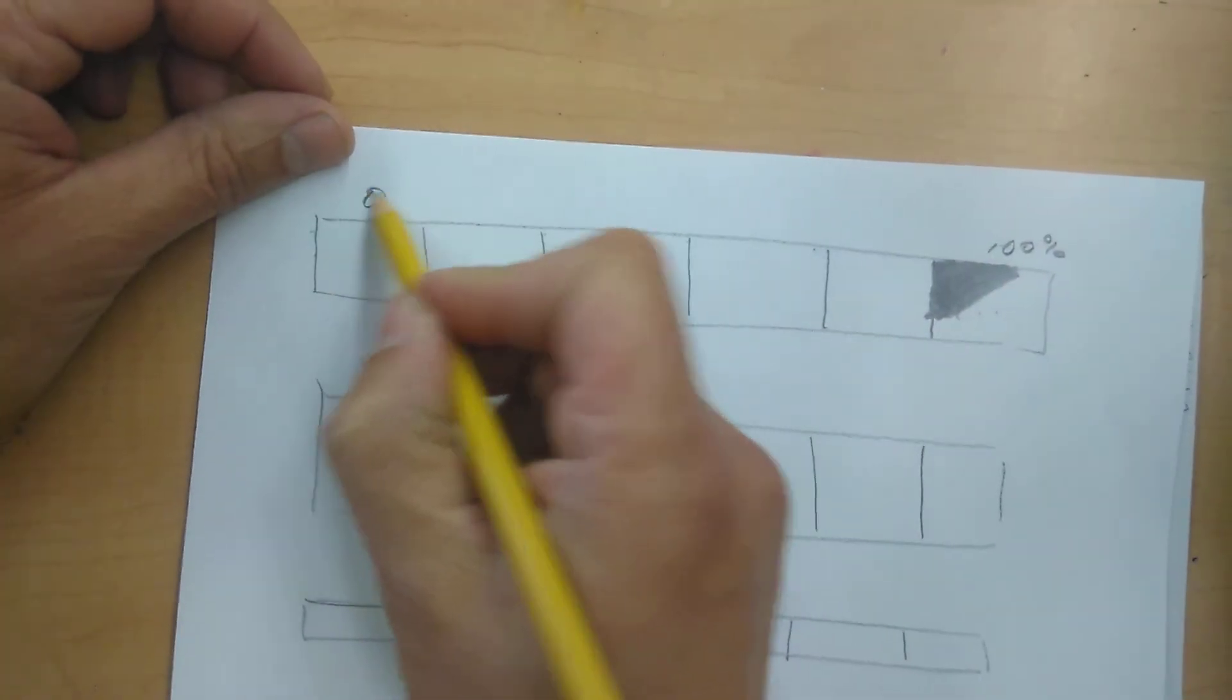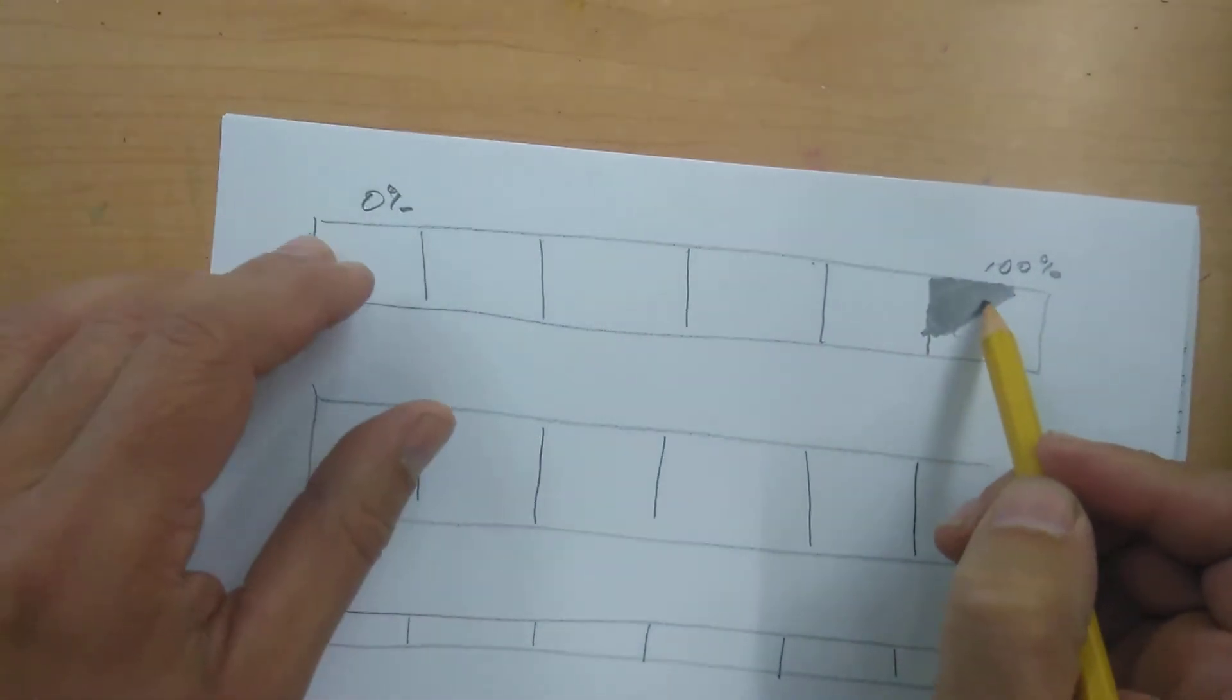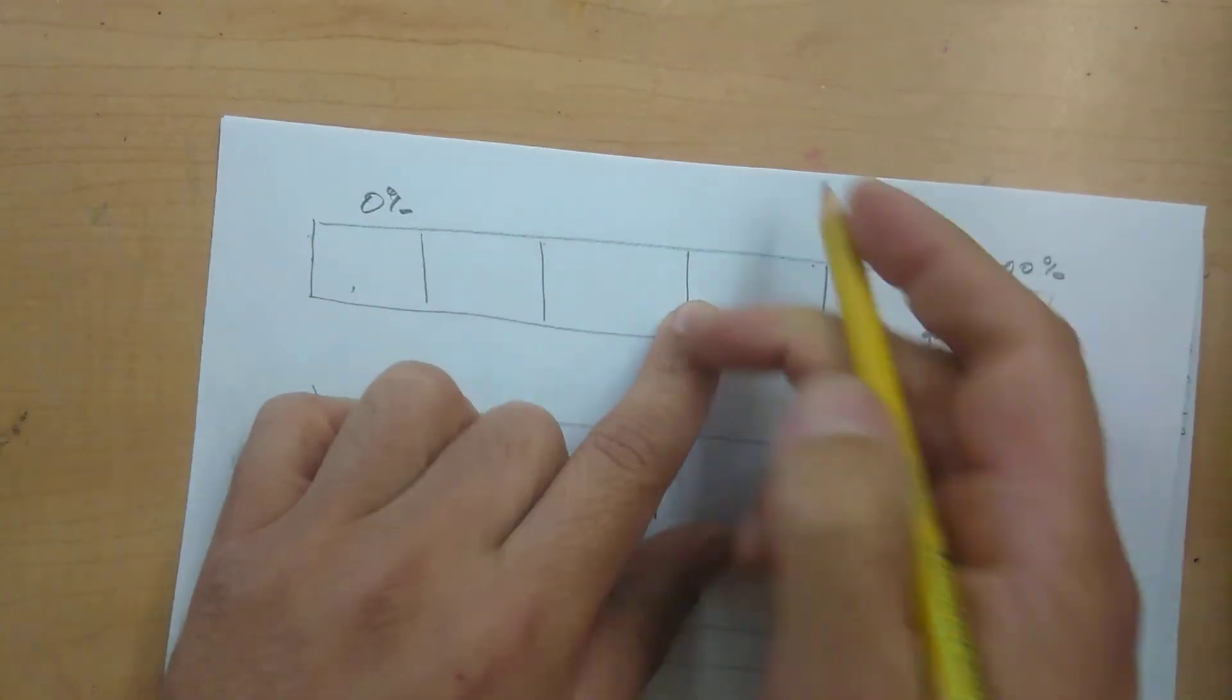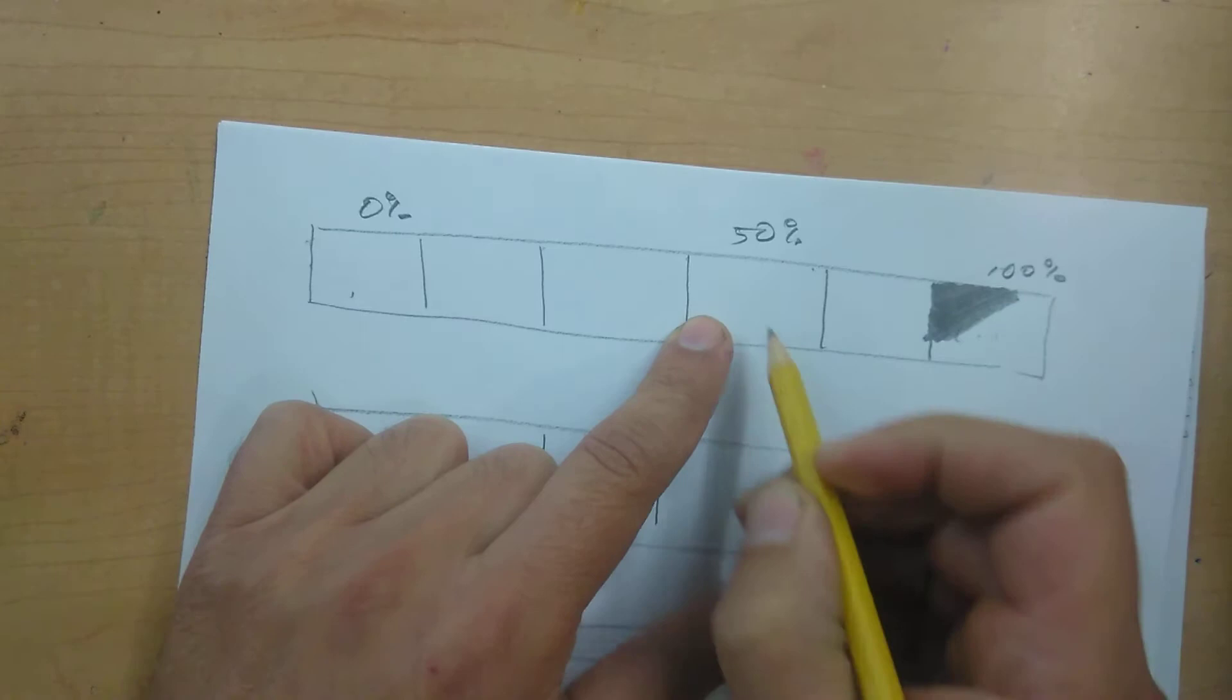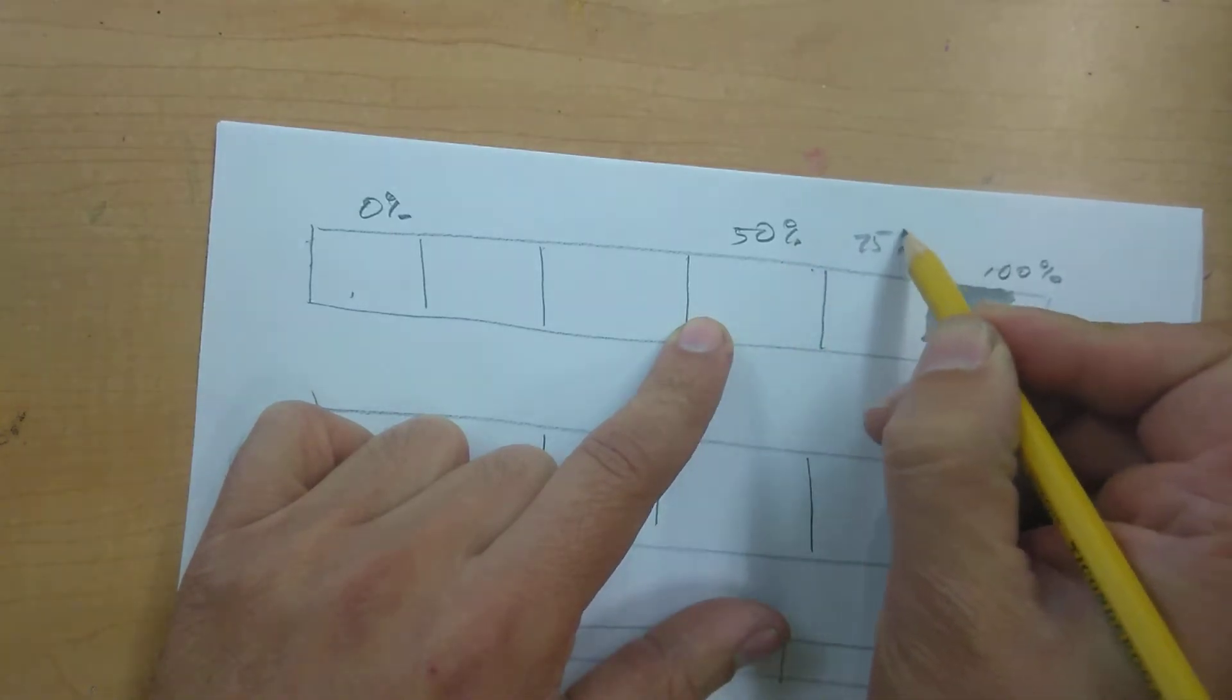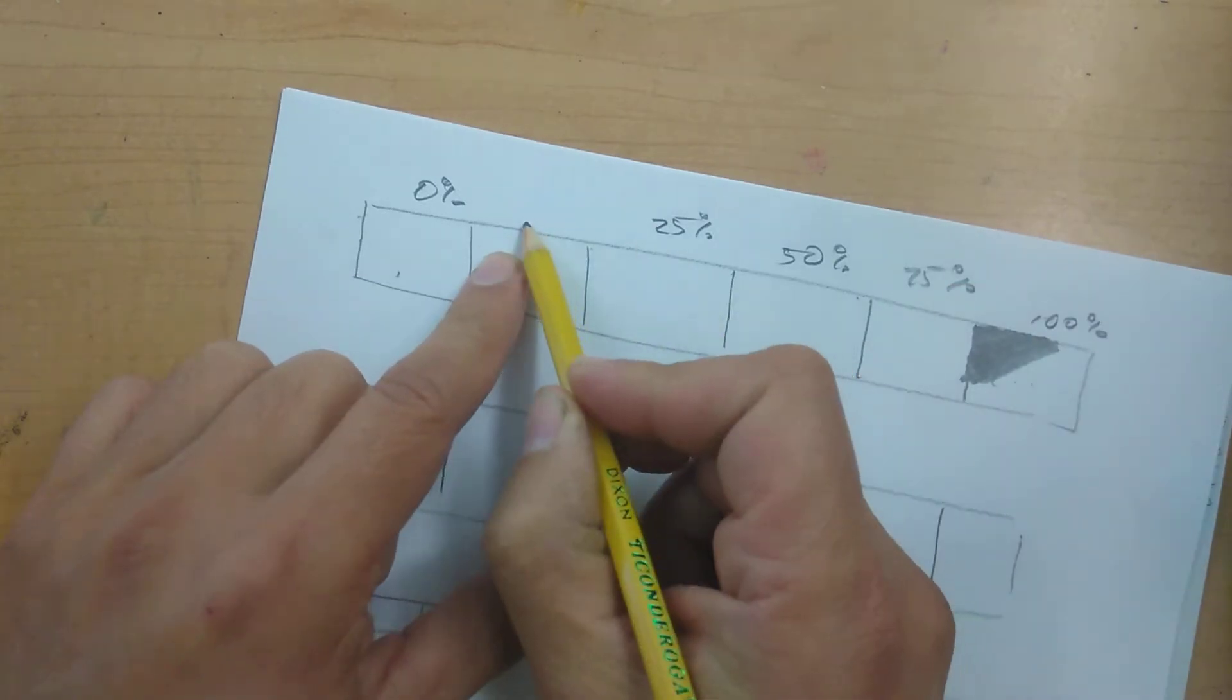If this is black, as you can imagine, 0% is going to be absolutely nothing. Here in the middle, let's say we have 50%. And just like money, we're going to have our 75% over here, 25%. And then we're going to go really light. We're going to do a 10%.